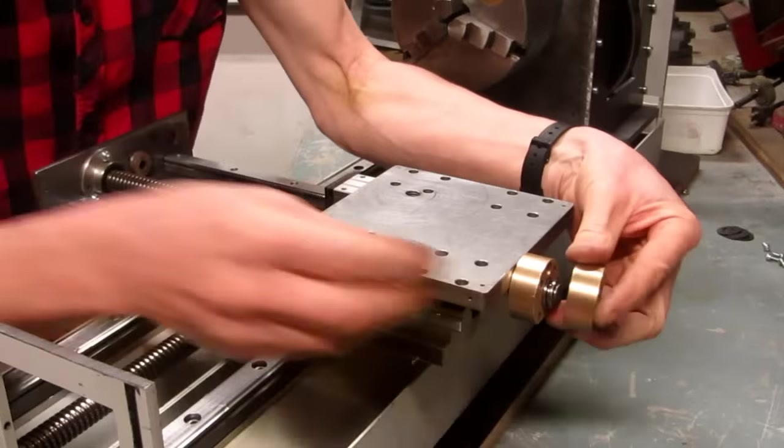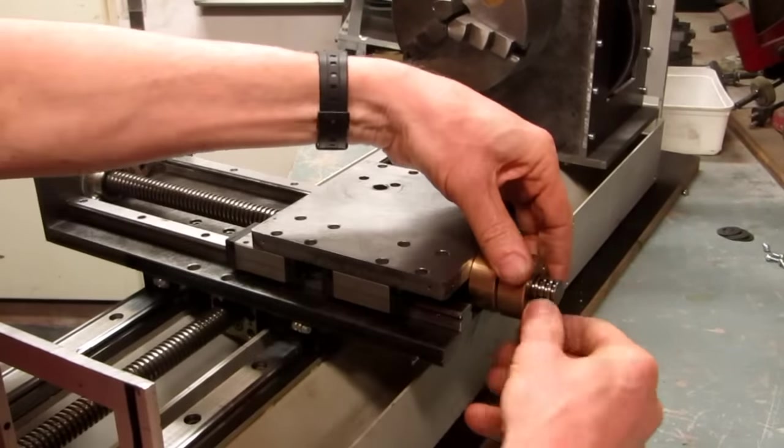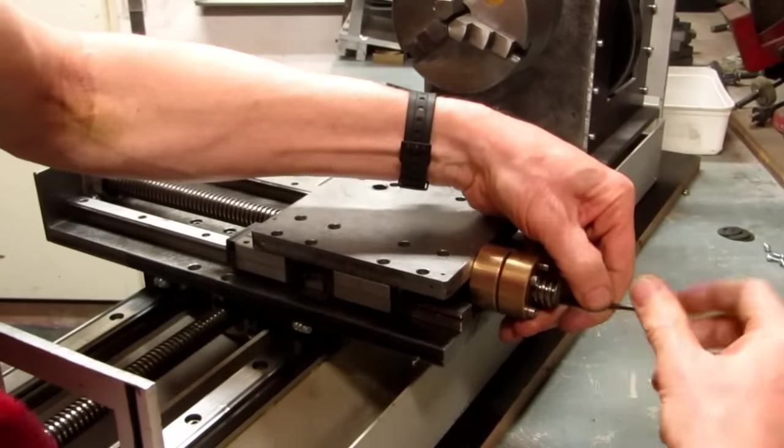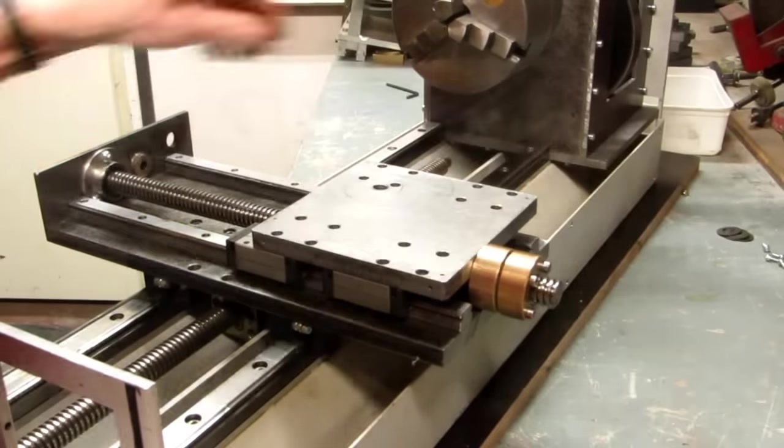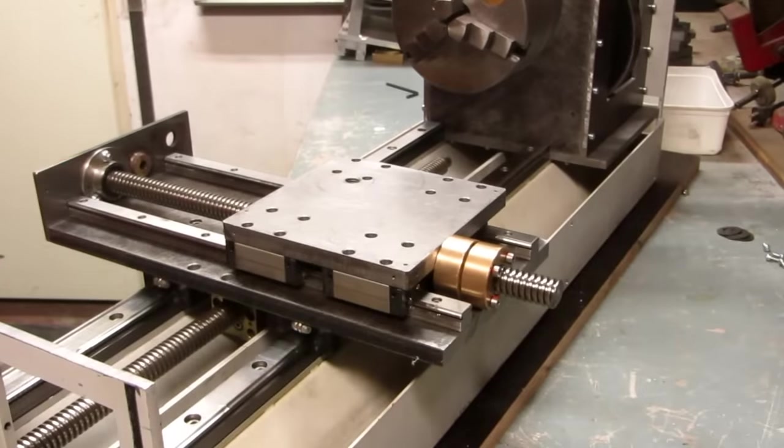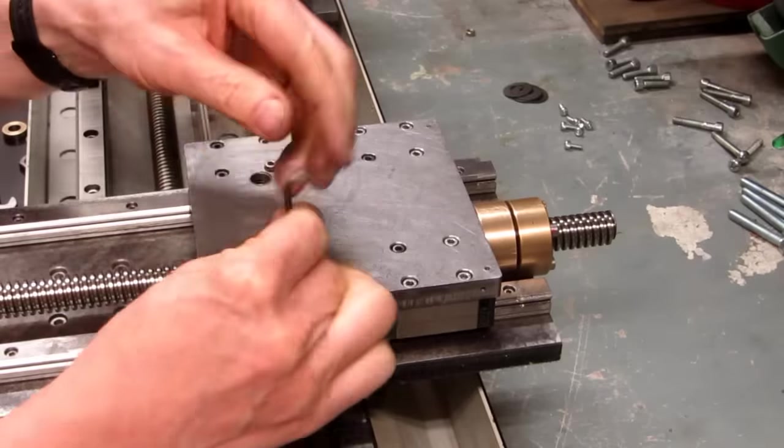The second bronze nut of the lead screw will help reduce backlash. It is pulled to the first nut with 4 screws, which need to be adjusted to get minimal backlash, but still allow easy rotation of the lead screw. The top plate is then bolted onto the linear bearing blocks.